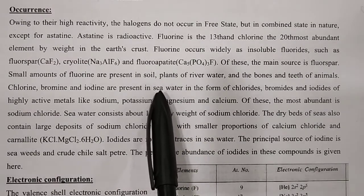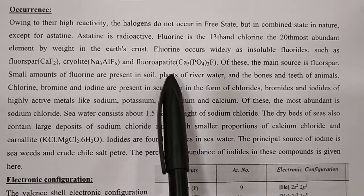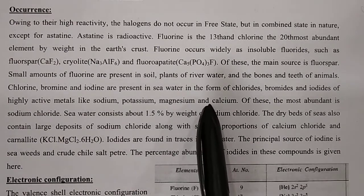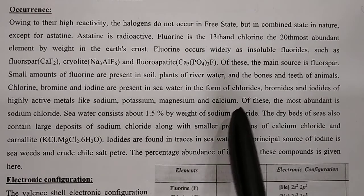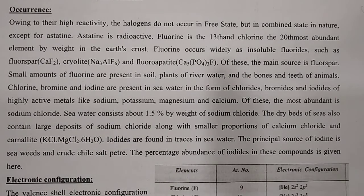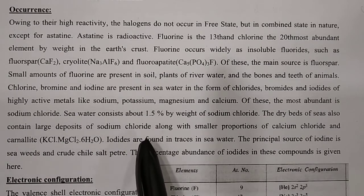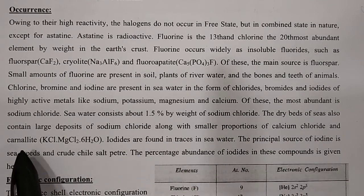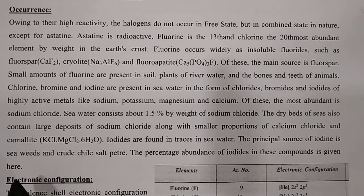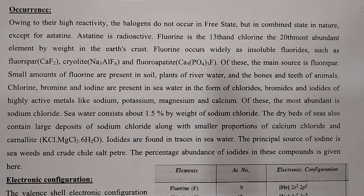Chlorine, bromine, and iodine are present in sea water in the forms of chlorides, bromides, and iodides of highly active metals like sodium, potassium, magnesium, and calcium. Sea water consists of about 1.5% by weight of sodium chloride. The dry beds of the sea also contain large deposits of sodium chloride along with smaller proportions of calcium chloride and carnallite. Iodides are found in traces in sea water; the principal source of iodine is seaweeds. Remember the percentage weight values as they can be useful in competitive exams and MCQs.